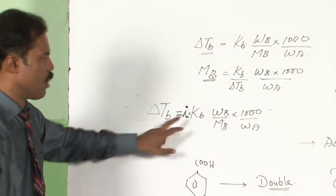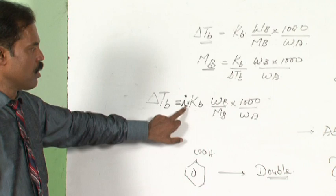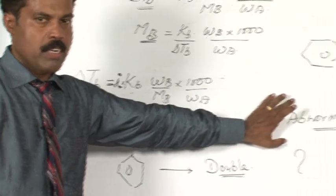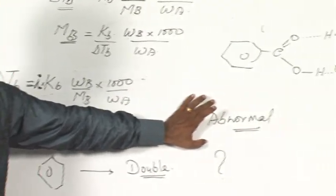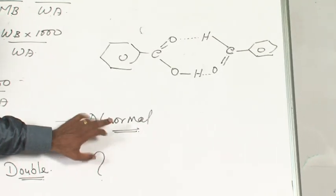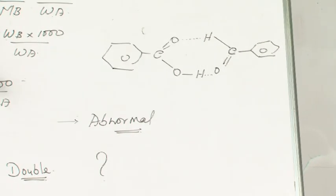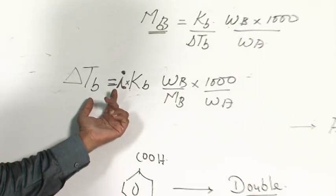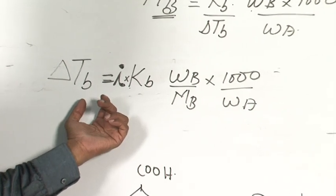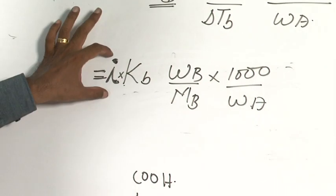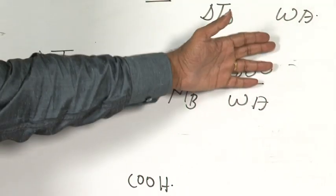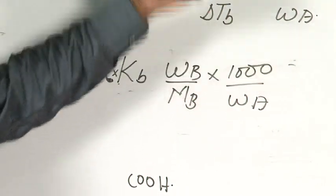The Van't Hoff factor corrects whatever abnormality is created — it is a correction factor. When you use the i value, the abnormality we have seen with sodium chloride would not happen.